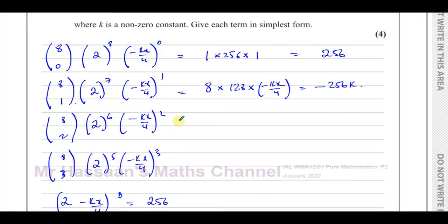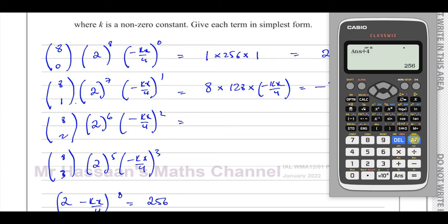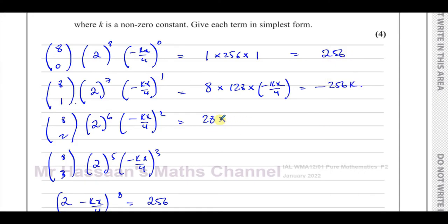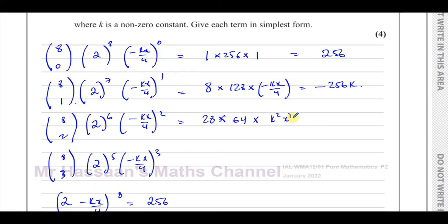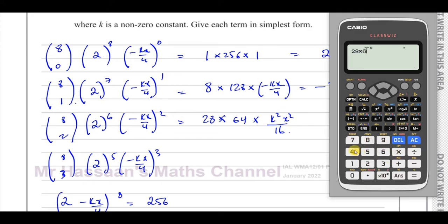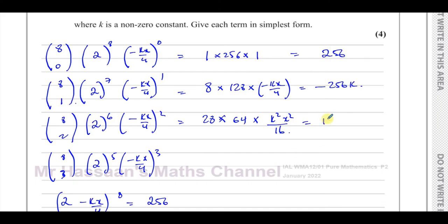For the third term: 8C2 is 28. Times 2 to the power of 6, which is 64. Times (minus kx over 4) squared — squaring minus k gives k², squaring x gives x², squaring 4 gives 16. So we have 28 times 64 divided by 16, which gives 112. This term is plus 112k²x².